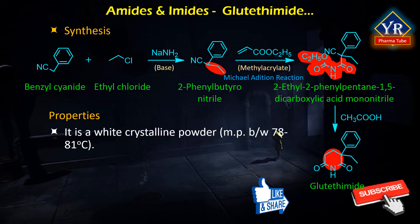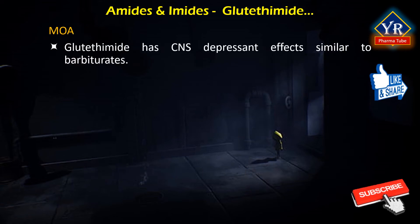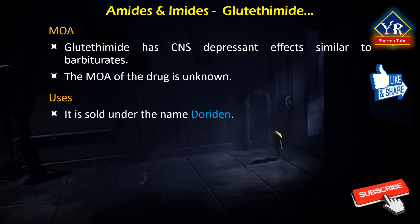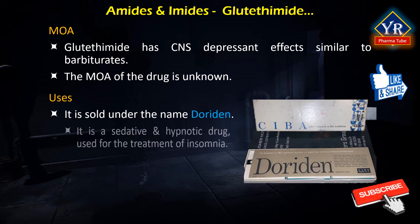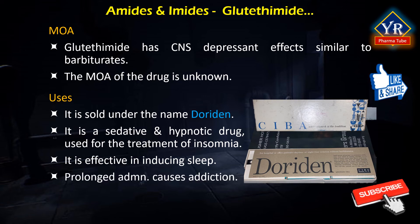Glutethimide is a white crystalline powder with a melting point between 78 to 81 degrees centigrade. It is freely soluble in acetone, ethyl acetate, and chloroform, and soluble in ethanol and methanol. Glutethimide has CNS-depressant effects similar to those of barbiturates; the mechanism of action of the drug is not known. It is sold under the brand name Doriden. It is used for the treatment of insomnia, effective in inducing sleep throughout the night and also suitable as a daytime sedative. Prolonged administration causes habituation and addiction.